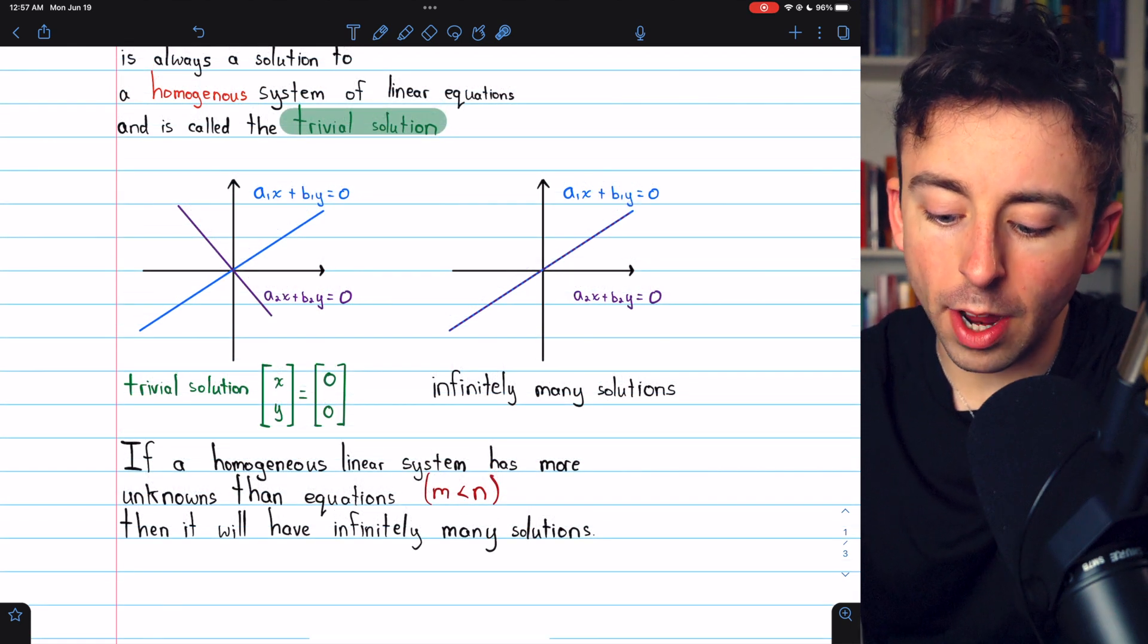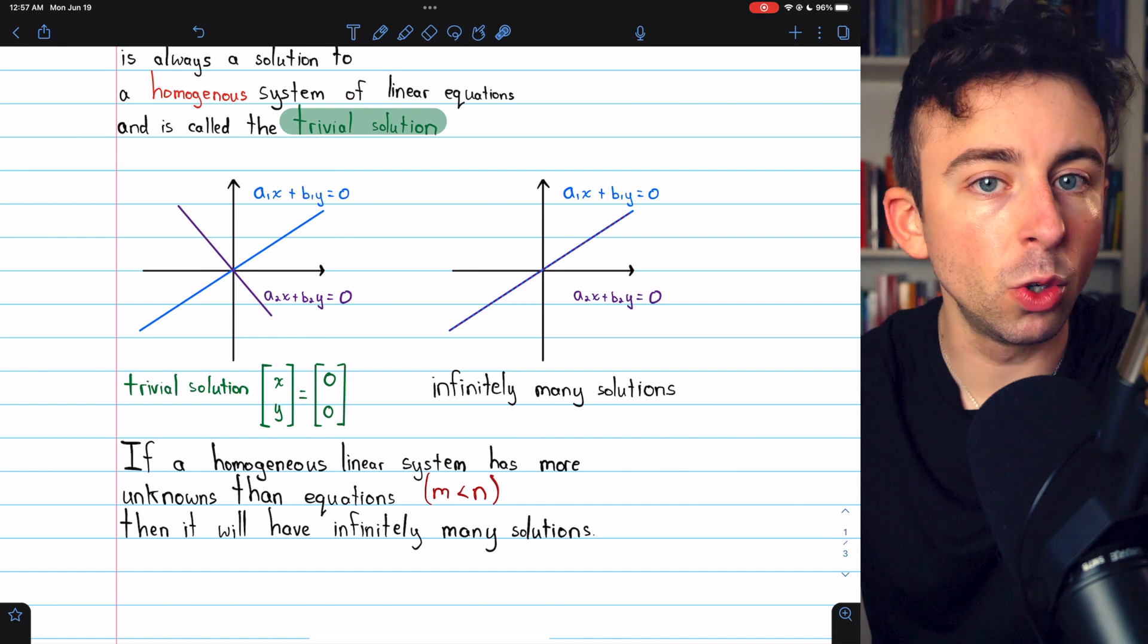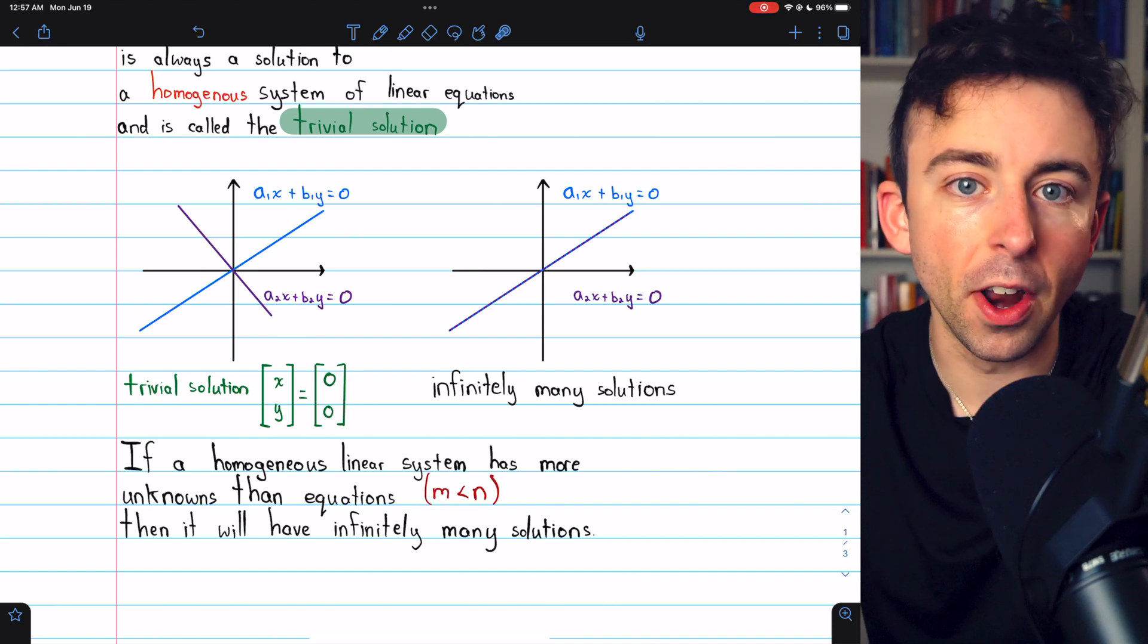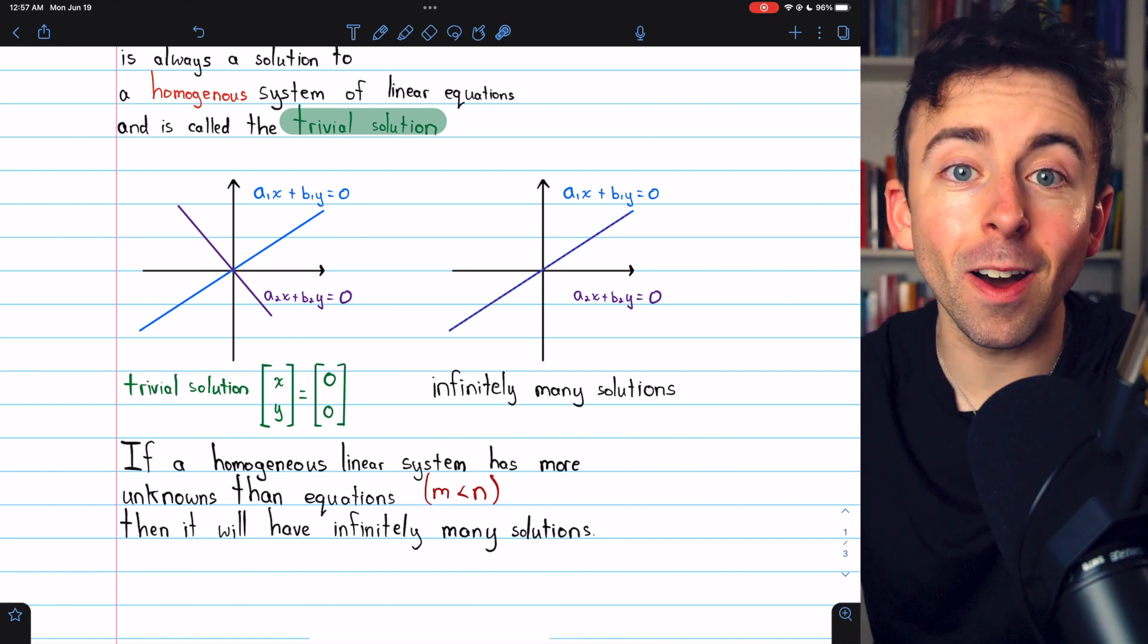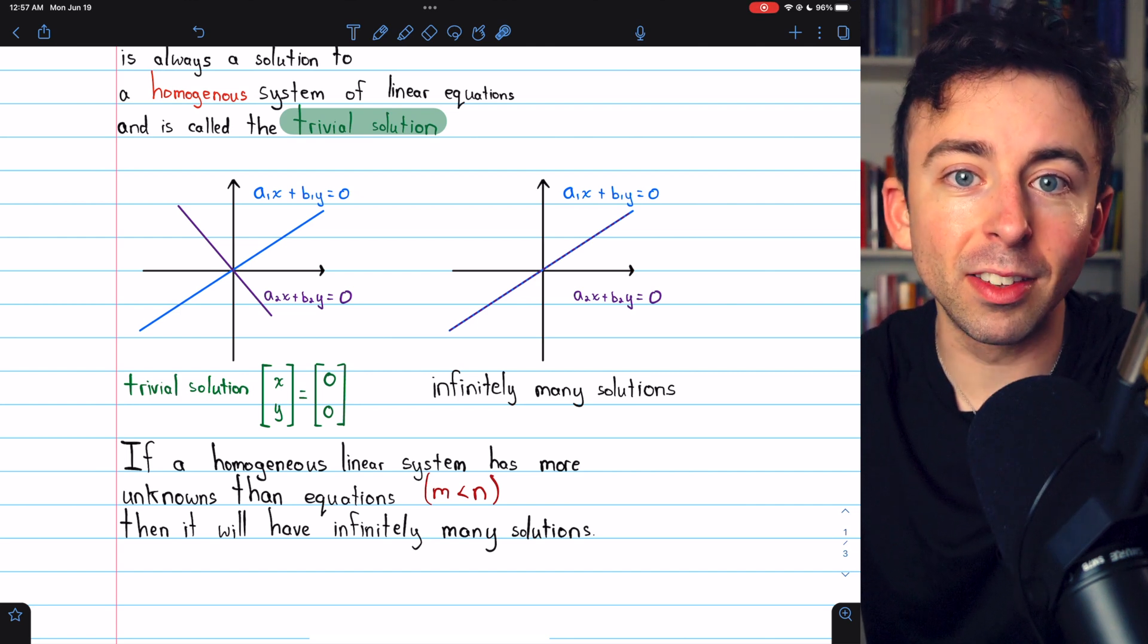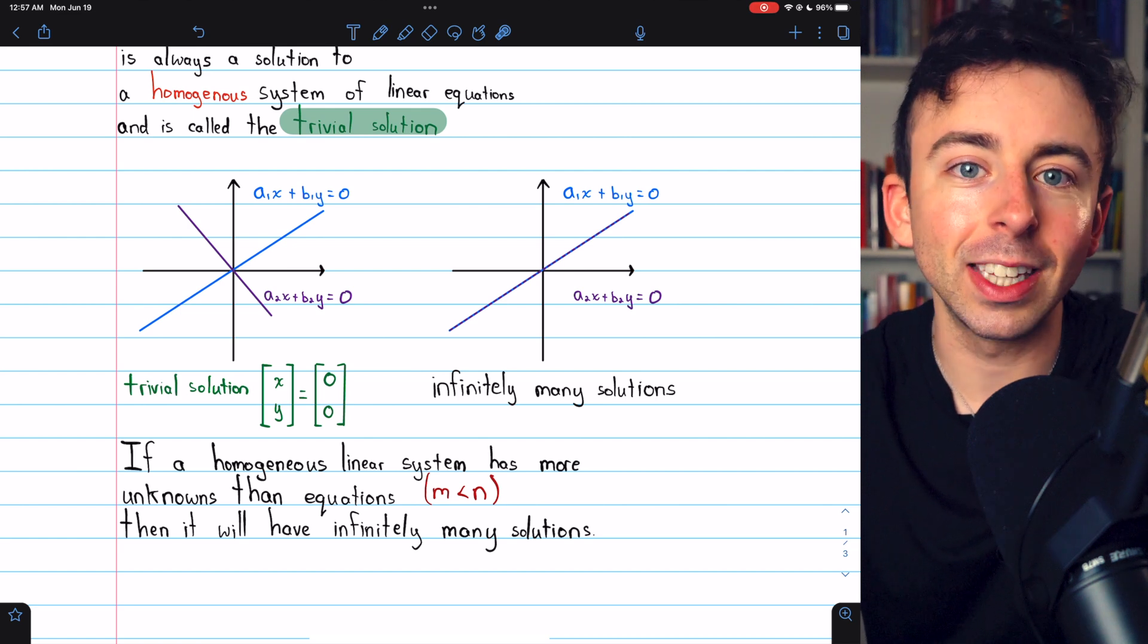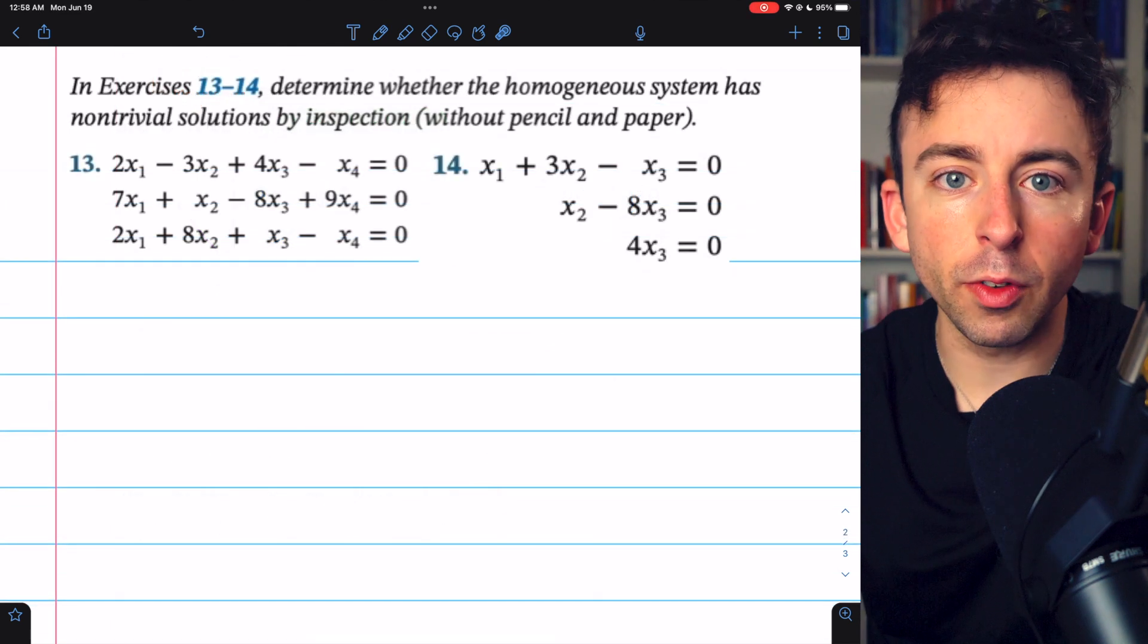like for example, maybe there's two equations in four unknowns, two equations is not enough to determine the values of four unknowns. And so that would leave at least one free variable giving us infinitely many solutions. Let's finish with a few examples from Howard Anton's linear algebra textbook.